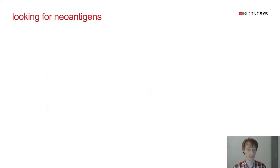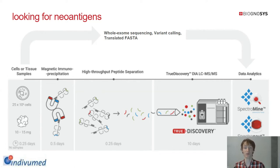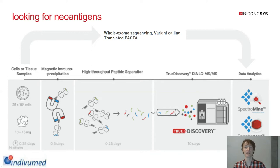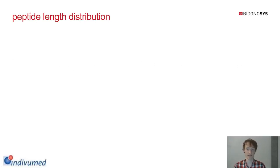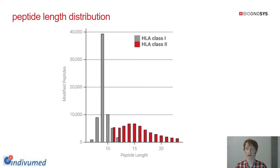We then partnered with Indivumet to look for neoantigens. We applied our classical pipeline complemented with Indivumet's whole genome sequencing, variant calling, and translated FASTA — generating expected mutations that we could query in Spectromine and Spectronaut to look for neoantigens. Neoantigens are immunopeptides that present a mutation unique to the tumor and not found in healthy tissue. Looking at data quality first, the peptide length distribution showed a sharp peak at nine-mers for HLA class 1 and a wider distribution for class 2.